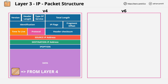As packets move through each intermediate layer 2 network, the packet will be inserted or encapsulated in a layer 2 frame specific for that network. A single packet might exist inside tens of different frames throughout its route to its destination.